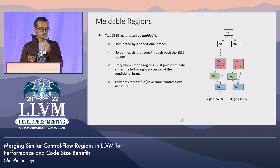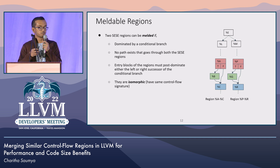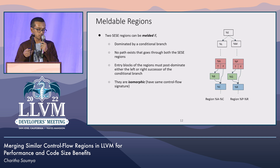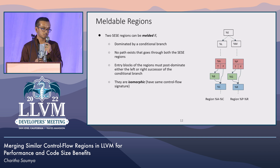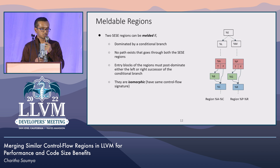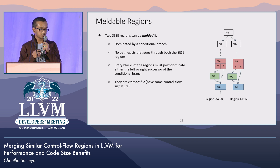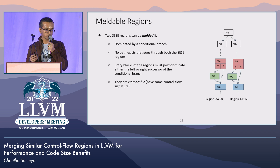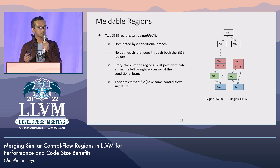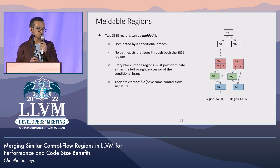Next, we need to define what meldable regions are. Two SESE regions must satisfy a set of conditions to be melded. The first condition is they should be inside an if-then-else conditional branch — dominated by a conditional branch — and there should be no path that goes through both regions. The next condition is that the entry blocks of the regions must post-dominate either the left or right successor of the conditional branch, ensuring we consider only the largest regions within the if or else section. Most importantly, the regions must be structurally similar — isomorphic. We do not consider merging non-isomorphic regions because that is a very complex problem.